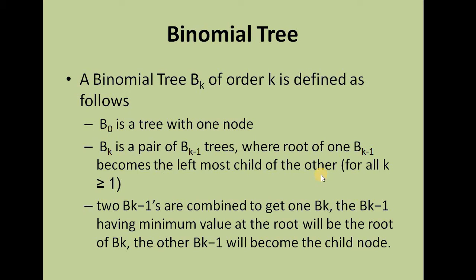We will see this with an example. Two BK minus 1 trees are combined to get one BK tree. The BK minus 1 having minimum value at the root — similar to the min heap property — will become the root of BK as well. The other BK minus 1 will become the child node.